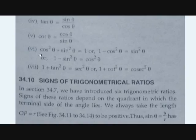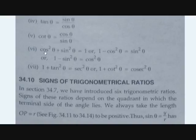We discussed the basic trigonometrical identities before. Now we will look at some other identities. Cos squared theta plus sin squared theta is equal to 1.